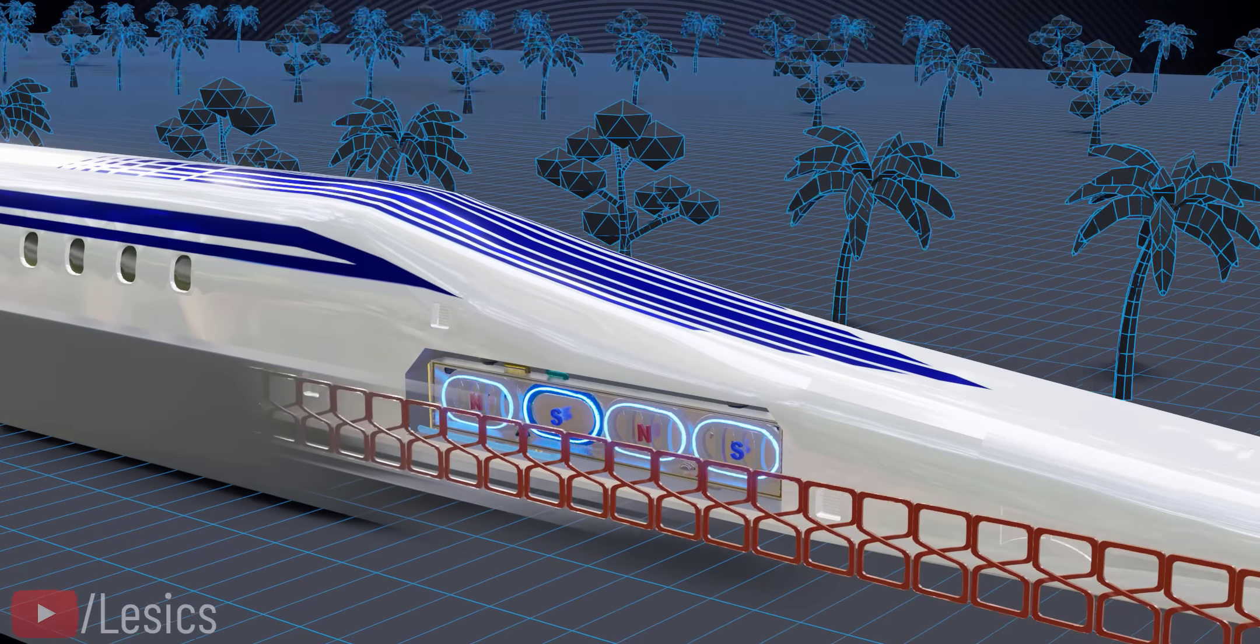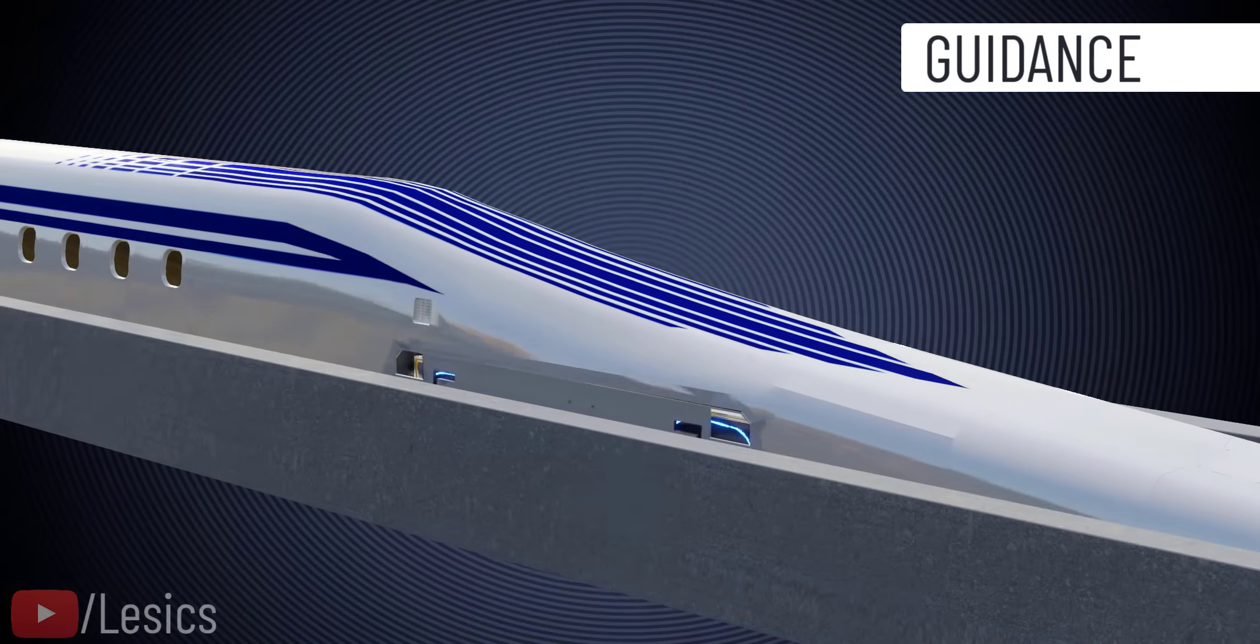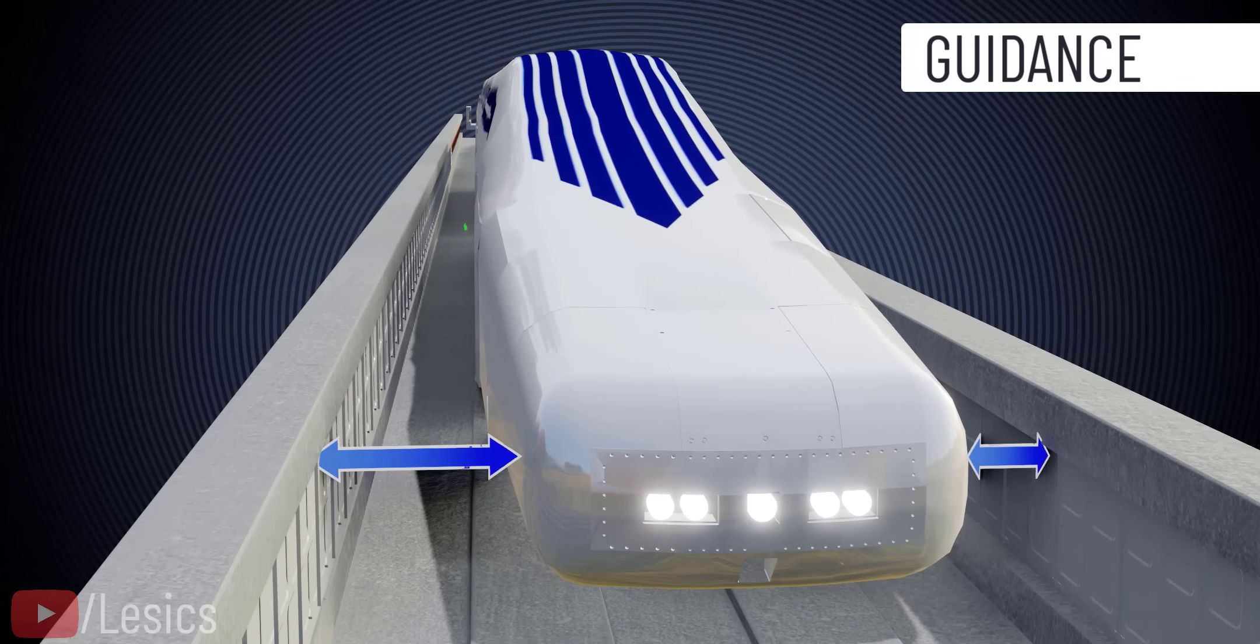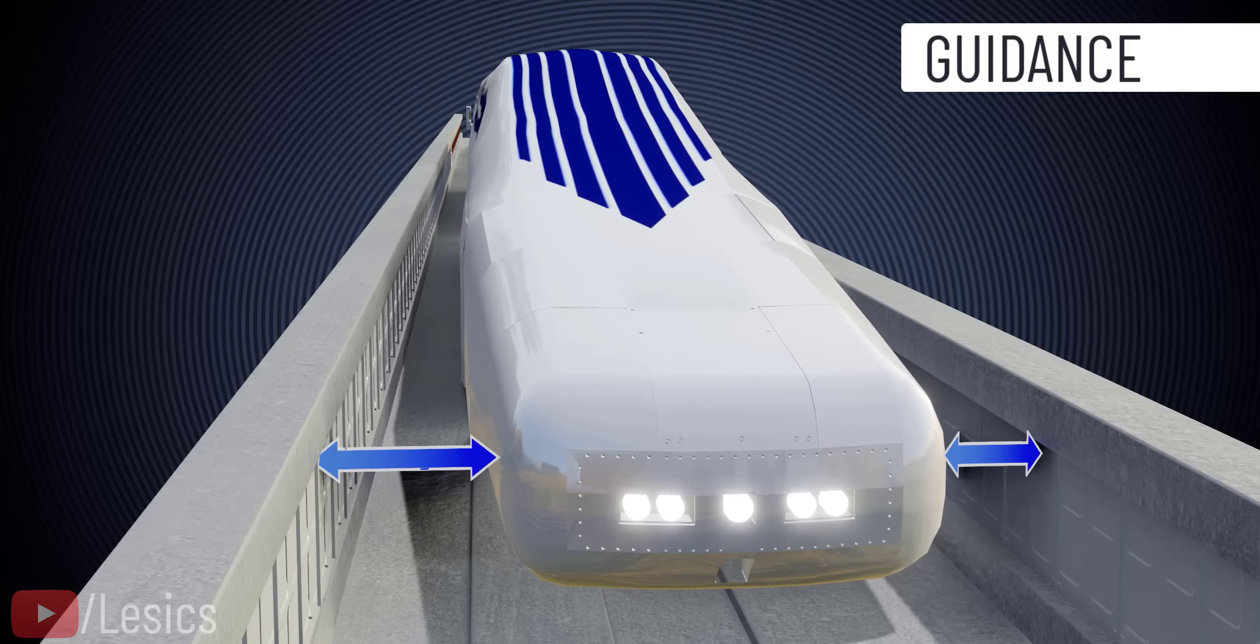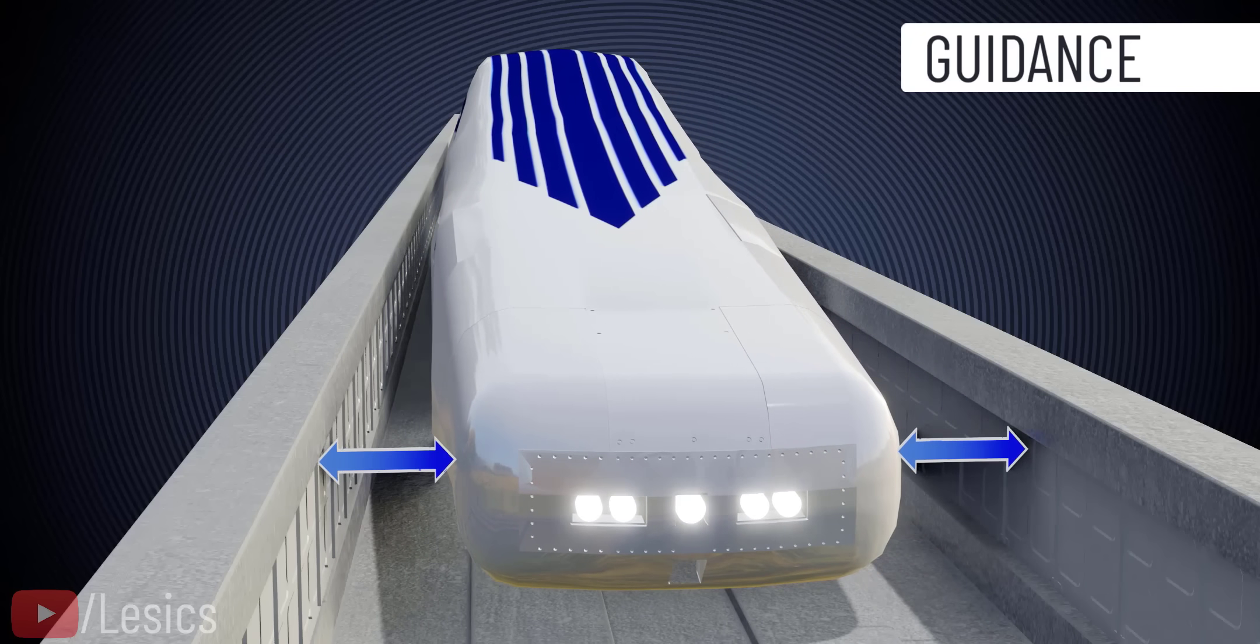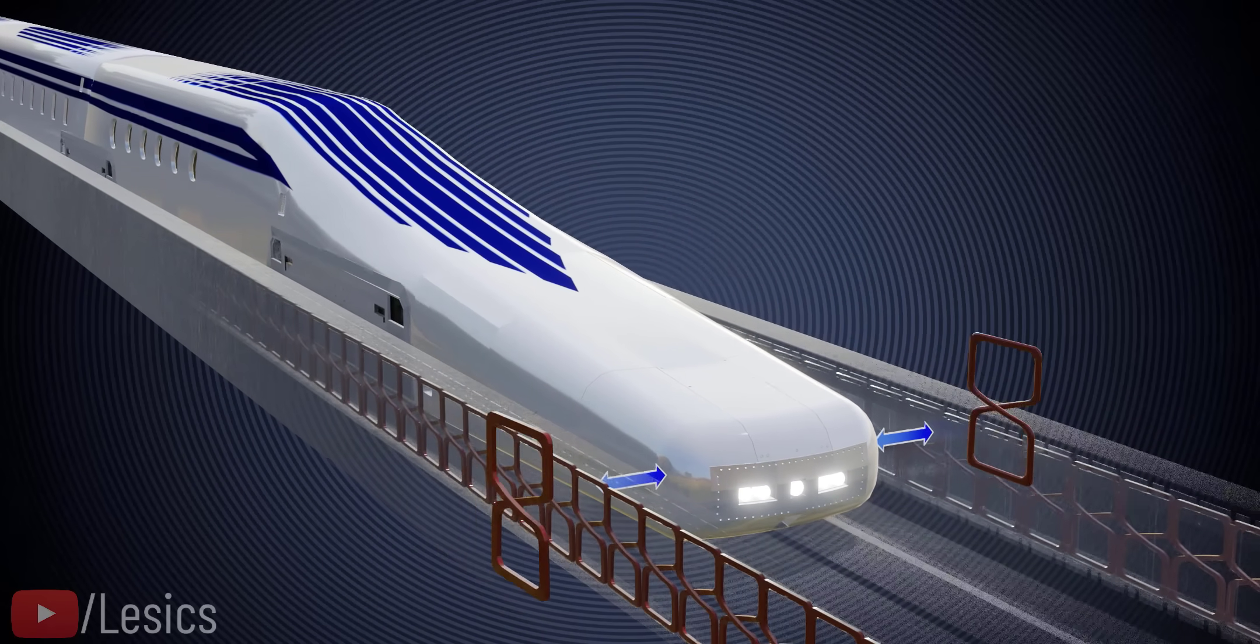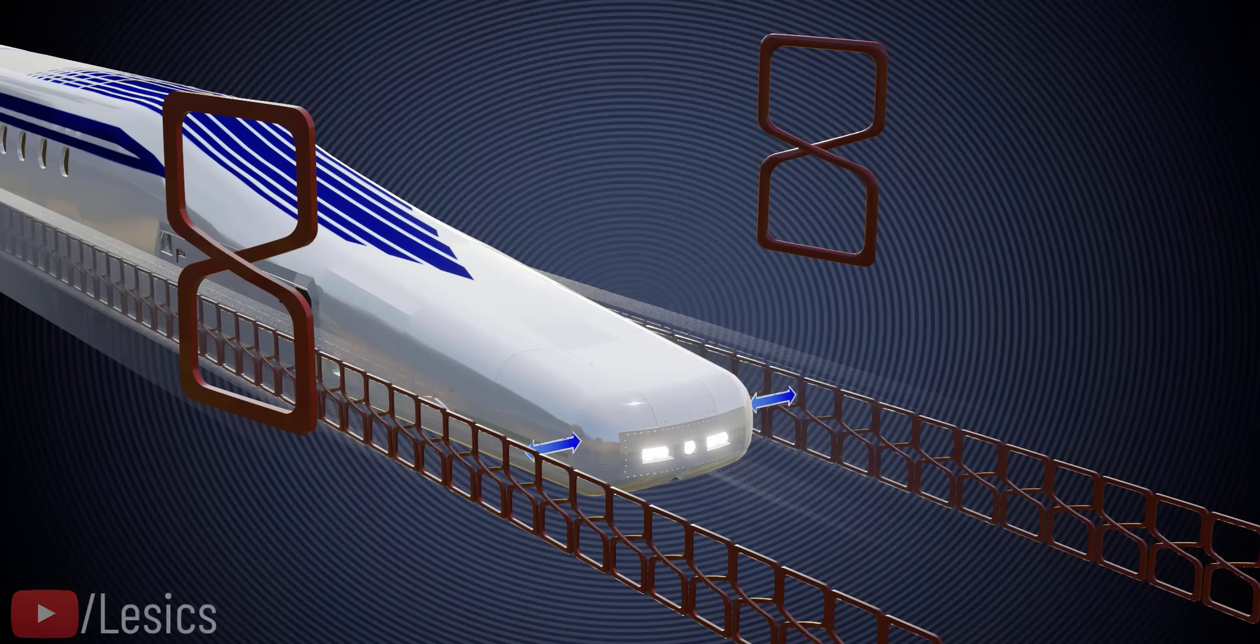Next comes the question of train guidance. Guidance means the train should always be centered. It should move without hitting the side walls. In other words, it should achieve lateral stability. Japanese engineers achieve this stability quite easily by interconnecting the figure 8 shaped coils we saw earlier, as shown.